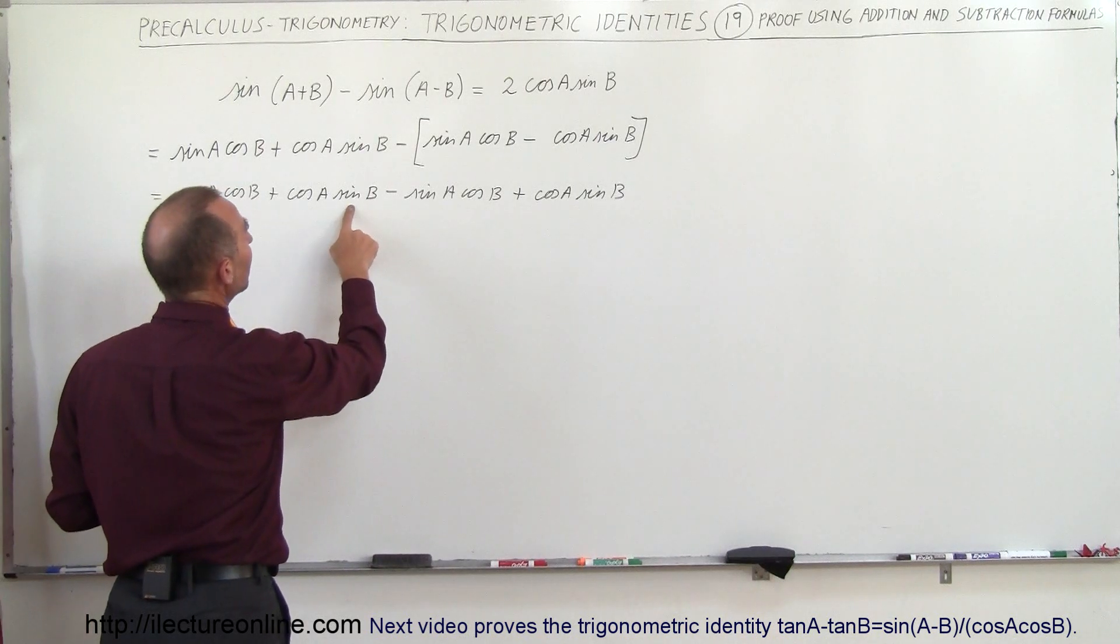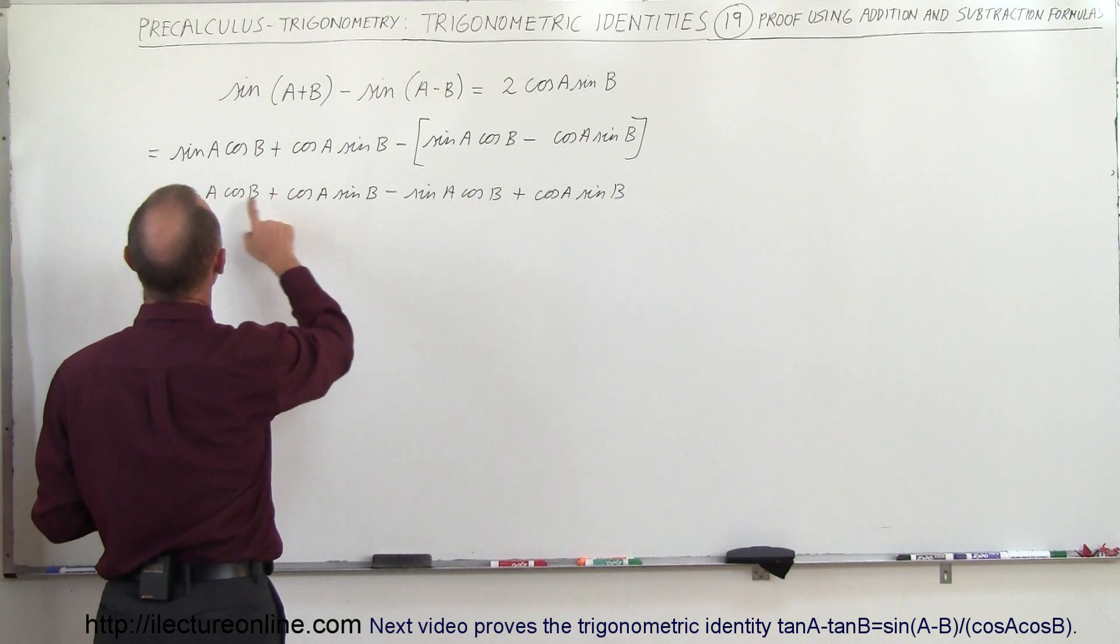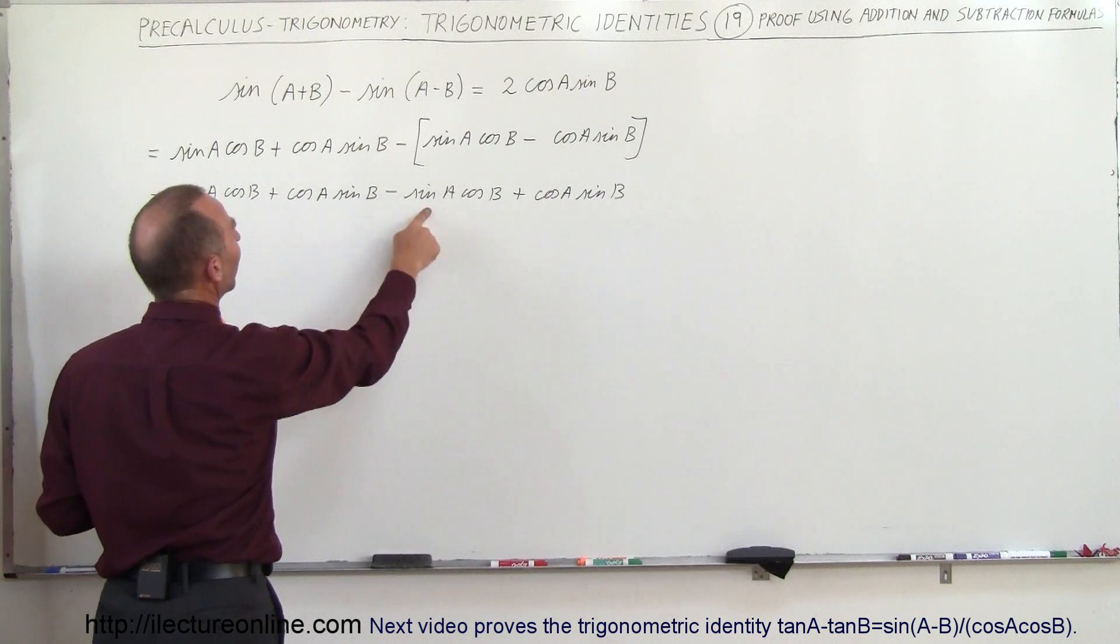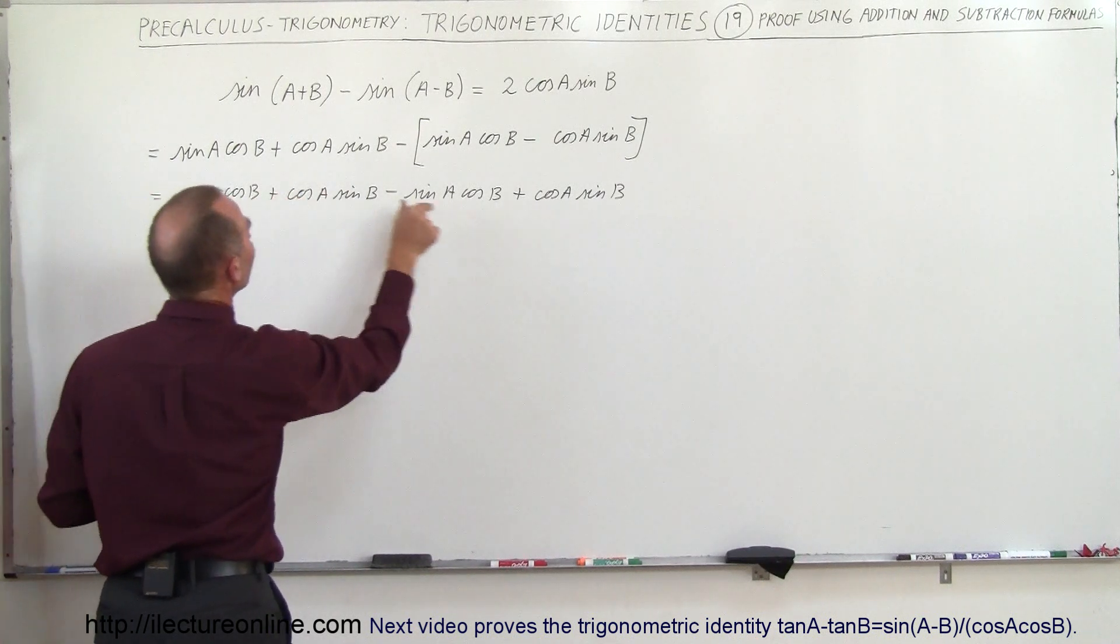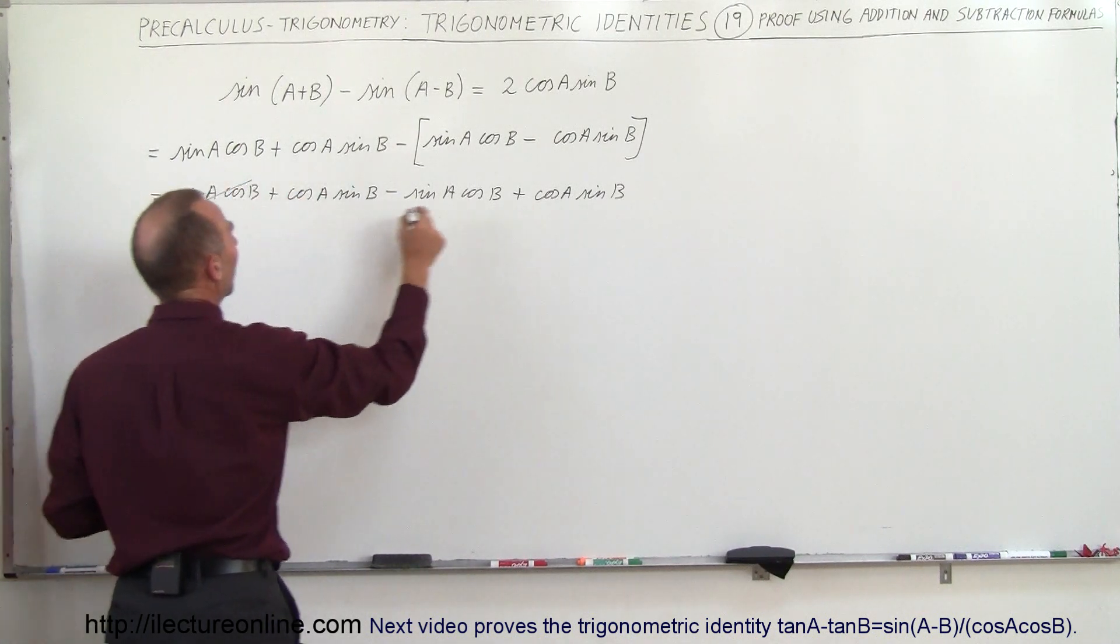So we have a cosine A sine B. Okay, how about a sine A cosine B? Sine A cosine B here, that's positive, that's negative. So this here cancels out with that.